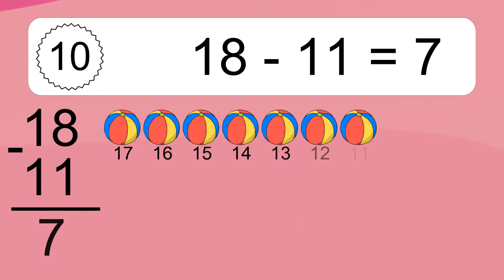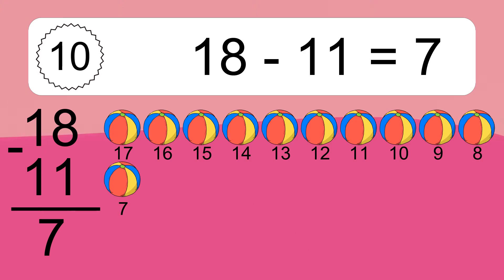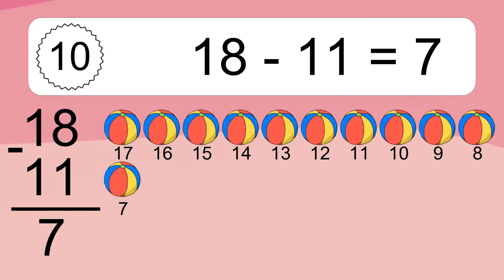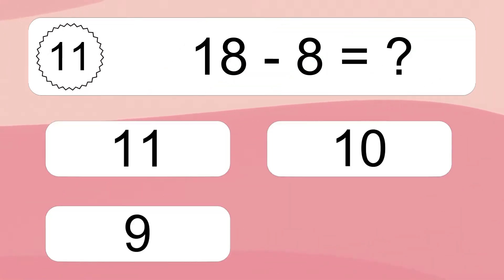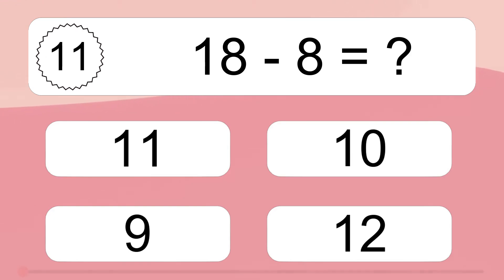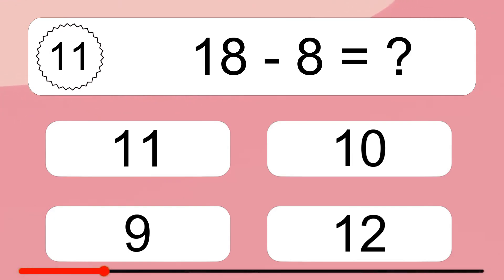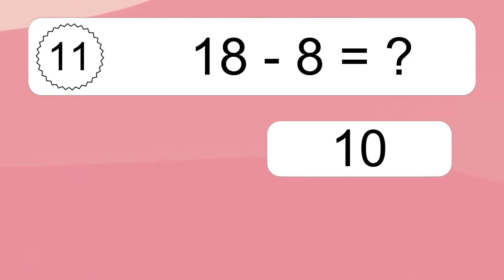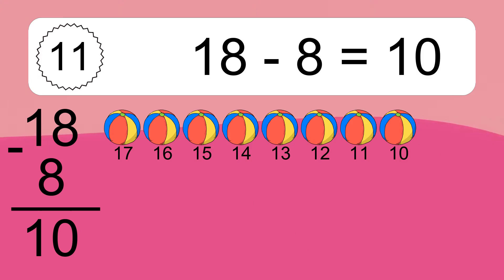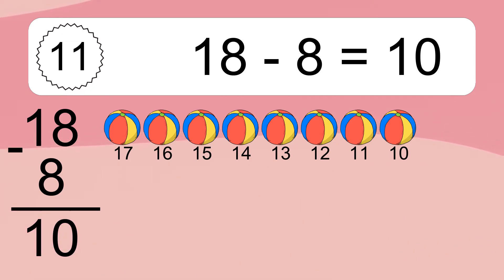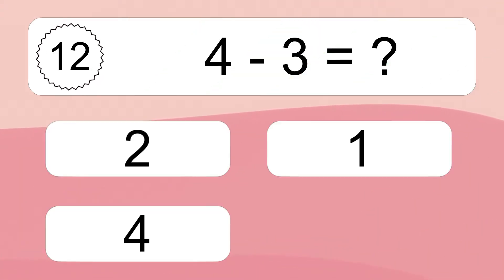18 minus 11 equals 7. Let's count it: 17, 16, 15, 14, 13, 12, 11, 10, 9, 8, 7. 18 minus 8 equals what? 18 minus 8 equals 10. Let's count it: 17, 16, 15, 14, 13, 12, 11, 10.